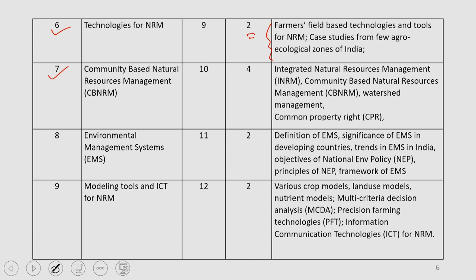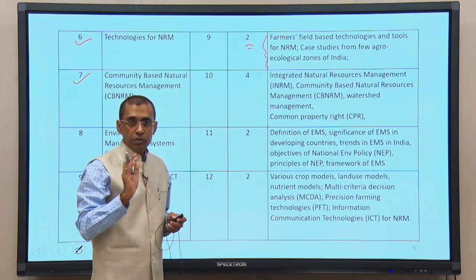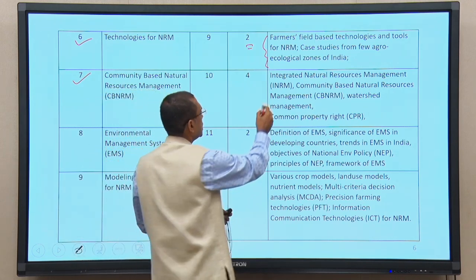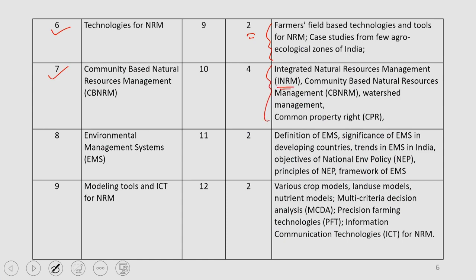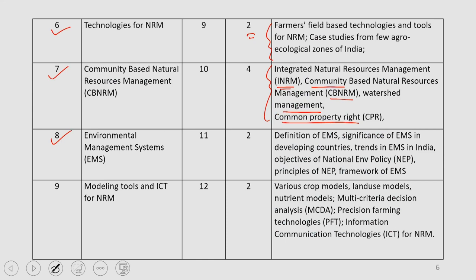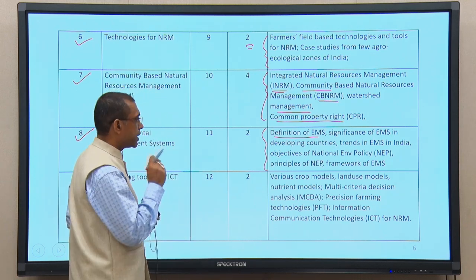Most people working in environmental sciences, sustainability, and NRM are aware of CBNRM and its importance. I would spend quite a significant amount of time on this aspect, around three to four classes, covering integrated natural resources management known as IRNRM, then CBNRM, watershed management, and common property rights. Next, we will move to EMS, environmental management system, which is a very important aspect not only for NRM but also for other aspects related to environment and ecosystem. We will cover the definition and significance of EMS in developing countries, trends of EMS in India, objectives of national environment policies, principles of NEP, and the framework of EMS.